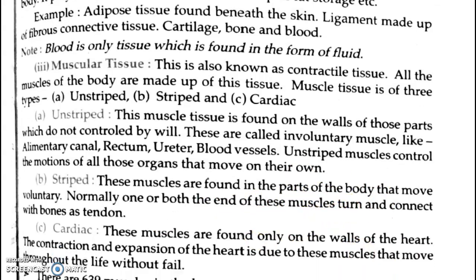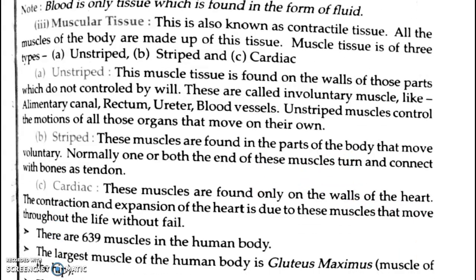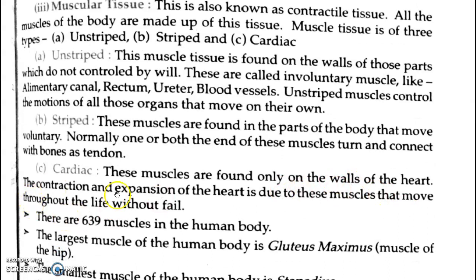Cardiac muscles are found only on the wall of the heart. The contraction and expansion of the heart is due to these muscles, which we call cardiac muscles. They move throughout the life without fail. There are 639 muscles in the human body.